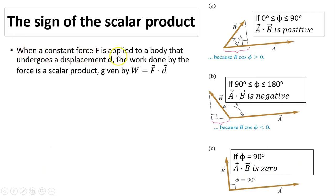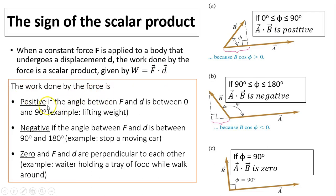When a constant force is applied to a body that undergoes a displacement D, the work done by the force is a scalar product: W equals F dot D. So work is an example of scalar product. Work done by the force is positive when the angle between force and displacement is between 0 and 90 degrees, negative when dragging against the motion, and zero when the force is perpendicular to displacement — like a waiter holding a tray.